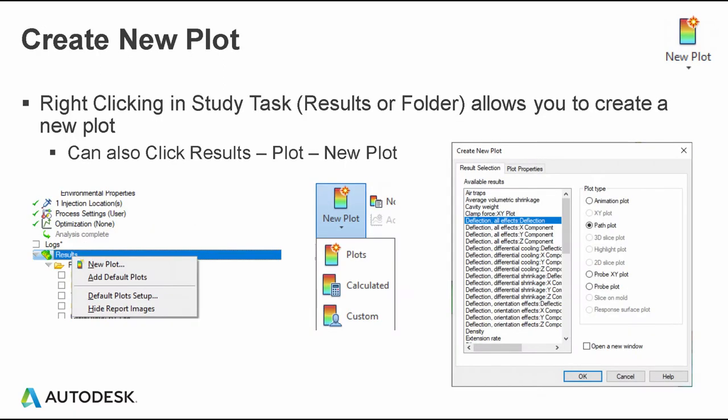You can also create new plots by right-clicking on your results and going to New Plot, or from the results panel click New Plot Custom. That brings up the Create New Plot context menu where you can select the plot you'd like to create as well as the plot type from that available result.